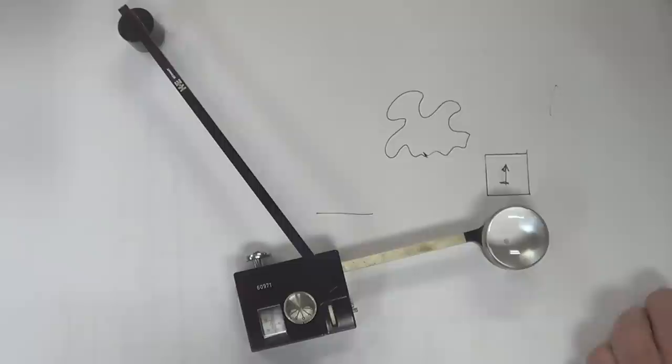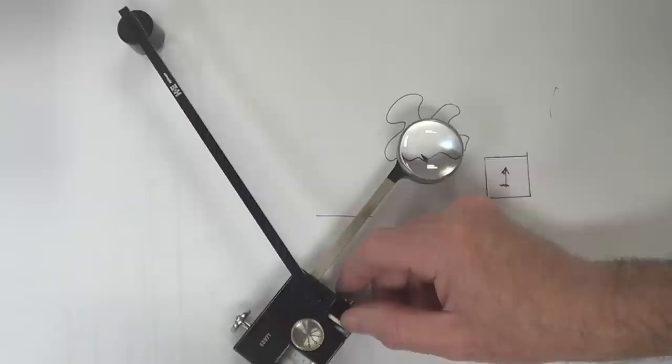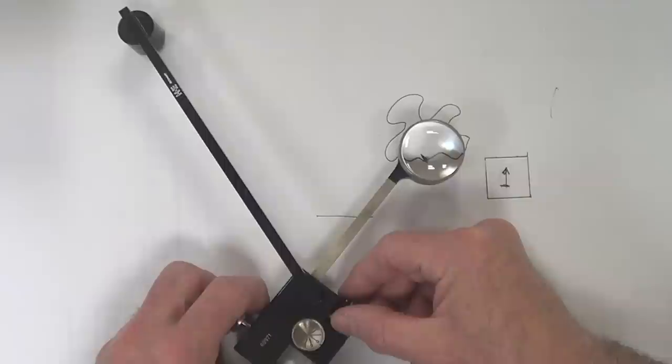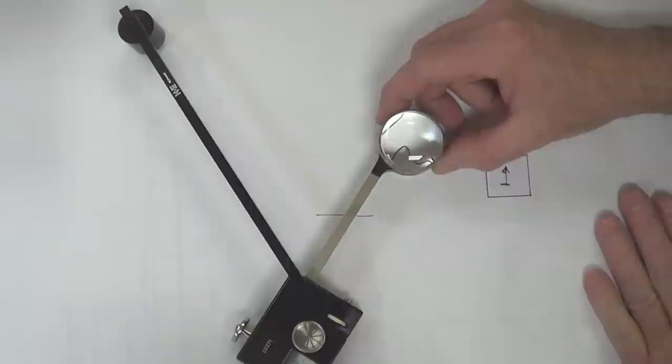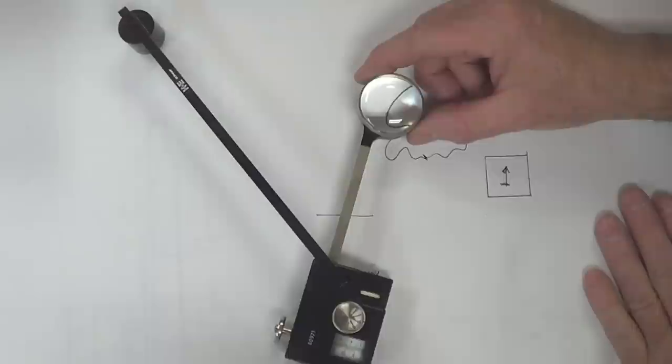So what you do is if I want to measure this weird amoeba shape, just looking at it looks like it's maybe probably one and a half to two. I'll put this little gizmo on some starting point and I'll go over here and set this to zero again.